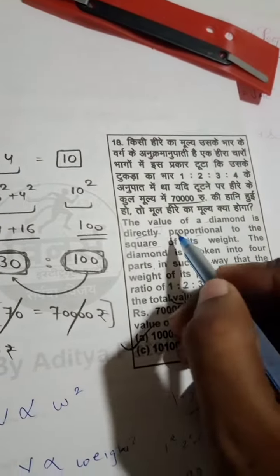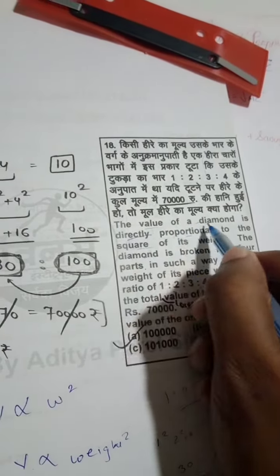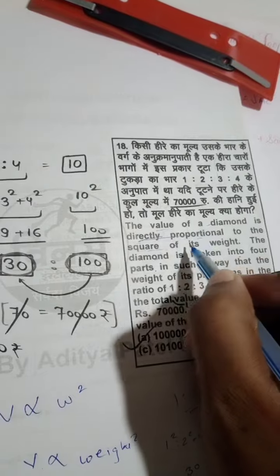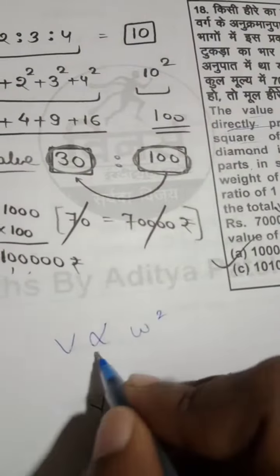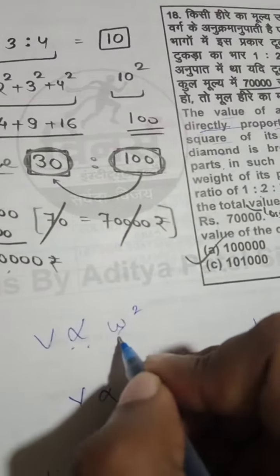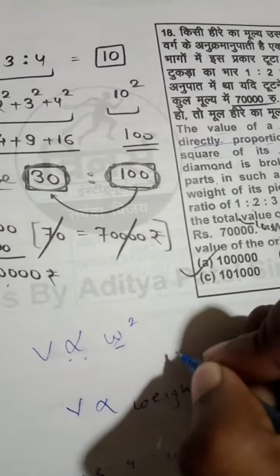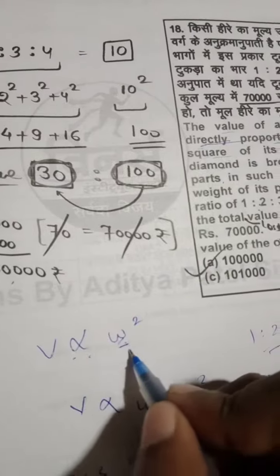It is very important to say here: the value of a diamond is directly proportional to the square of its weight. The value is depending on the weight, therefore value varies.